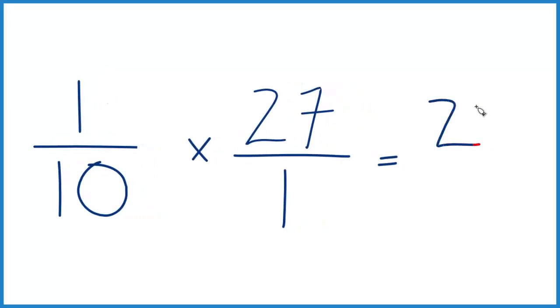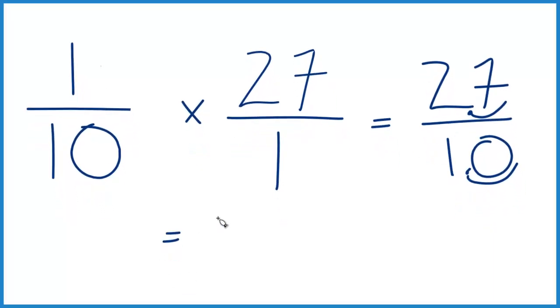1 times 27 is 27, 10 times 1 is 10. And what you can do here is you can move your decimal place 1 over here and one place here, and you end up with 2.7 over 1, which is just 2.7. So one-tenth of 27 is 2.7.